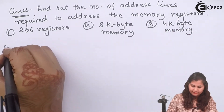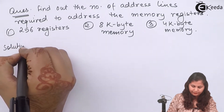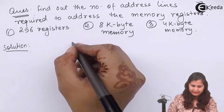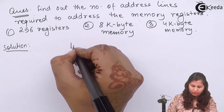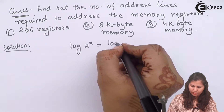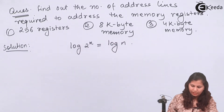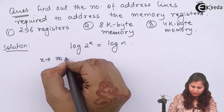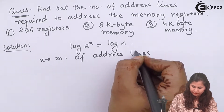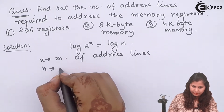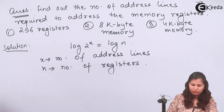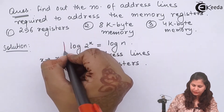Let's solve this. We know that the formula to find out the number of address lines is given by: log(2^x) = log(n), where x is the number of address lines and n is the number of registers. This is the formula which we will use.